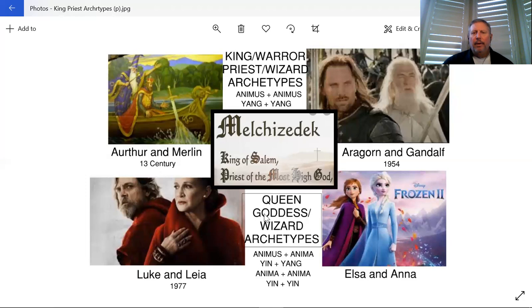At one time, Elsa was both queen and priest or wizard. She's the magical one, but she was also queen. In the most current version, she's given up the title of queen, given that back to Anna. We have the model of the queen and the wizard or goddess or priest. Now we have anima-anima, yin and yin.